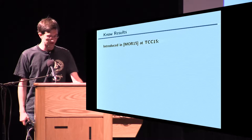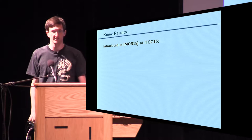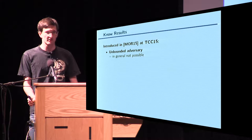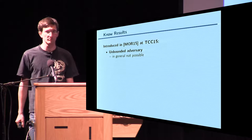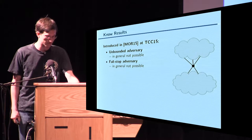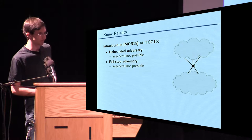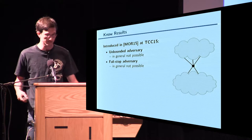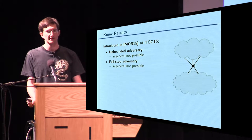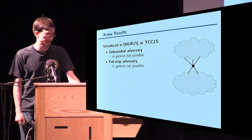So what is known? It was introduced at last year's TCC by Moran et al., who looked at the feasibility of topology-hiding communication in various models. Bad news: if you consider unbounded adversaries, it seems not to be possible — there will be some leakage in general. The same is true for fail-stop adversaries — an adversary who can make a party stop at any time. The issue is that if you have a cut vertex in your graph, the adversary can find out whether a node is a cut vertex by stopping it and checking whether the remaining graph is still connected.